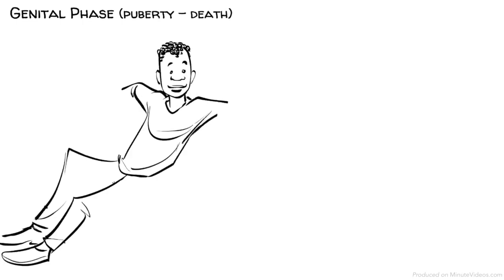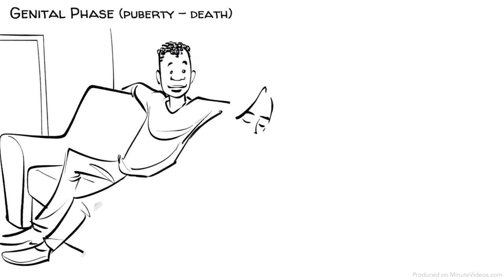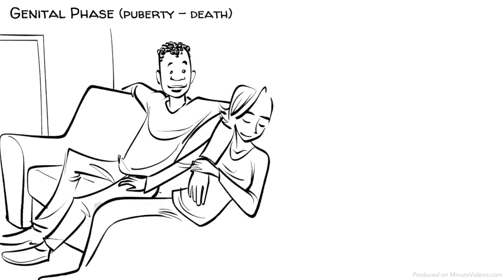The genital phase, puberty to death. Once we reach puberty, our libido starts to become active again and we develop an interest in sexual partners.